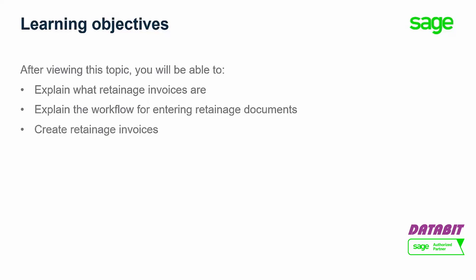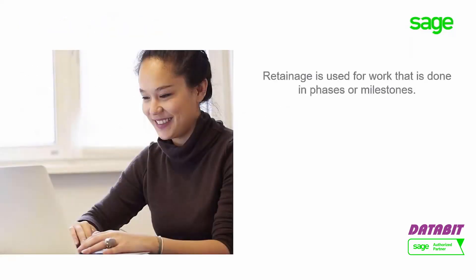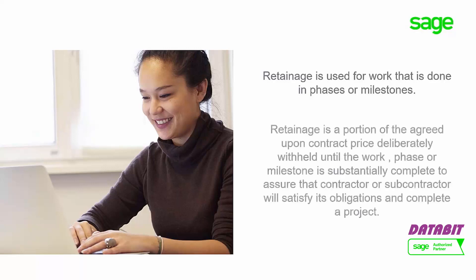Retainage is used for work that is done in phases or milestones. Retainage is a portion of the agreed-upon contract price deliberately withheld until the work, phase, or milestone is substantially complete, to assure that the contractor or subcontractor will satisfy its obligations and complete a project.